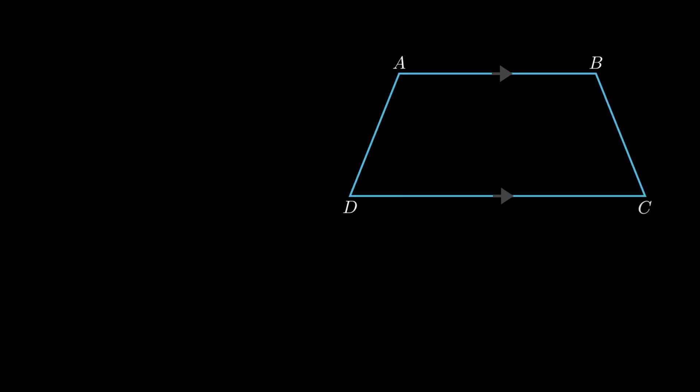The problem states that ABCD is a trapezium such that AB is parallel to side CD and side AD is equal to side BC. We need to show that angle A equals angle B, that is, angle 1 equals angle 2.